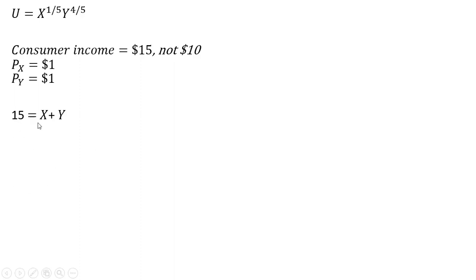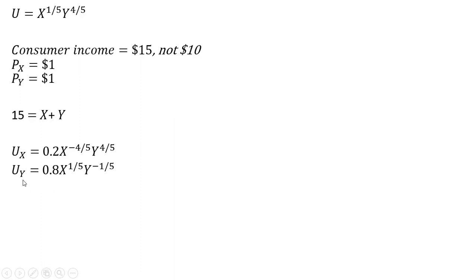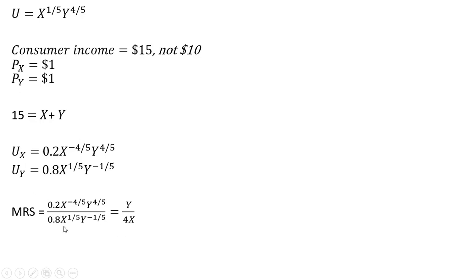The consumer's budget constraint looks like this, and now we're going to maximize utility. We get the marginal utility of good X: this 0.2 is just 1/5 brought down in front, and then 1/5 in the exponent subtracting 1 leaves X raised to the minus 4/5 power. We get the marginal utility of good Y: we bring down the 4/5 in front — 4/5 is just 0.8 — and then 4/5 minus 1 leaves us with minus 1/5 in the exponent. Setting up the marginal rate of substitution: MU_X divided by MU_Y.